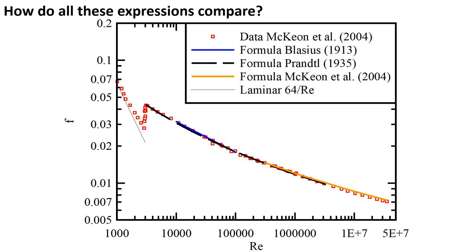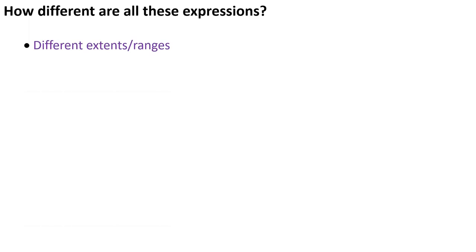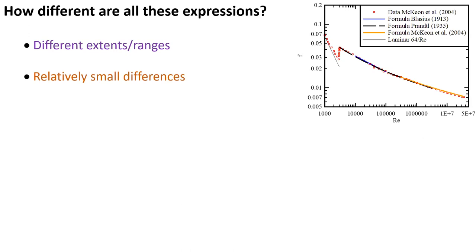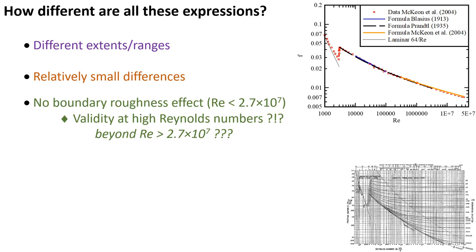How different are all these expressions? First and foremost, their extents differ. But otherwise, they show relatively small differences altogether. They show no boundary roughness effect for Reynolds number up to 2.7×10^7.